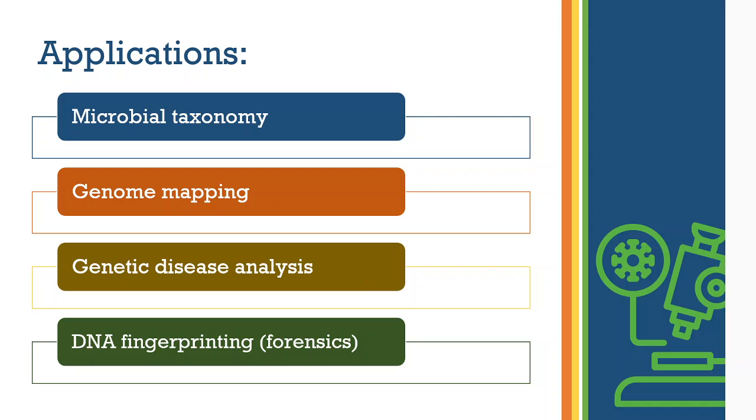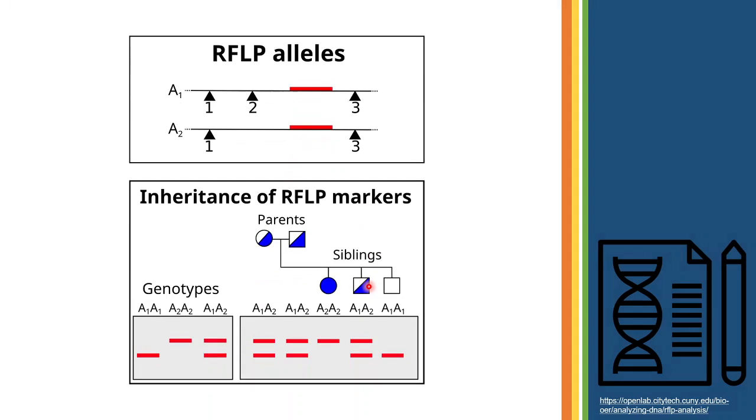The next picture shows us about RFLP and allele mapping. As we can see, the site 2 has disappeared in allele A2. So, the restriction endonuclease won't cut the DNA at that site. When an individual has allele A1, they would show band 2 to 3 on visualization which is shorter than the A2 band 1 to 3.